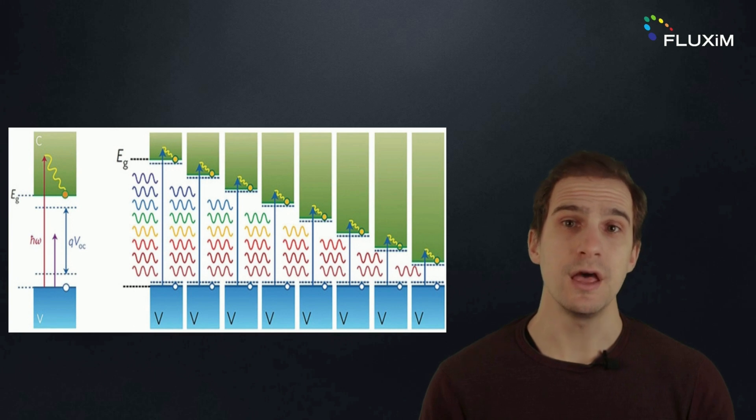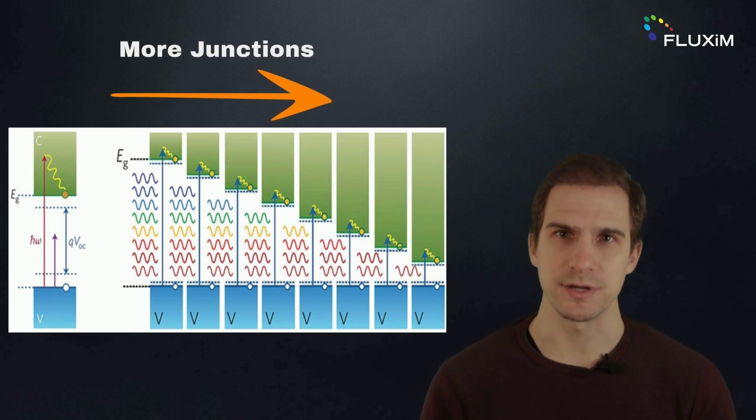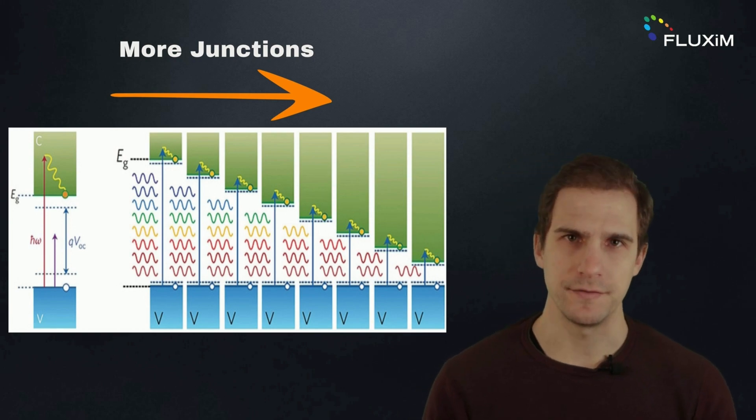A multi-junction solar cell has two or more junctions and each one absorbs at a different wavelength. The more junctions, the greater the portion of the solar spectrum that is absorbed, resulting in higher theoretical efficiency.